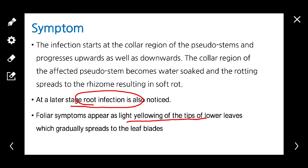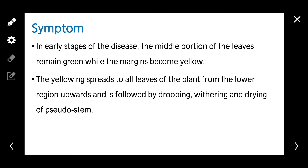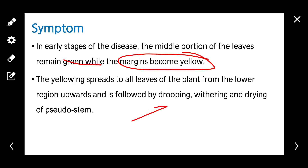Foliar symptoms appear as light yellowing of the tips of lower leaves, which gradually spreads to the leaf blade. In the early stage of the disease, the middle portion of the leaves remains green while the margins become yellow. The yellowing spreads to all leaves, which leads to drooping, withering, and dying of the pseudostem.